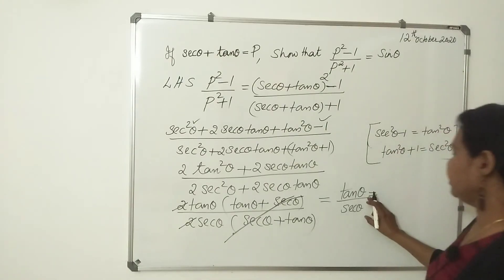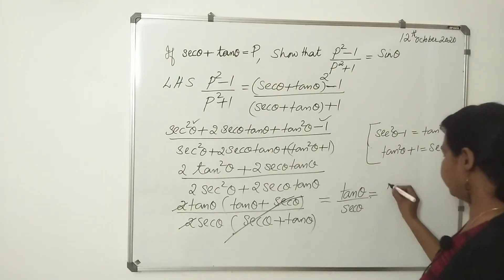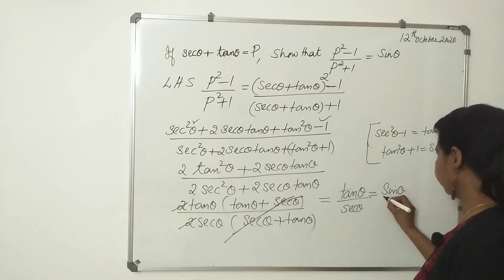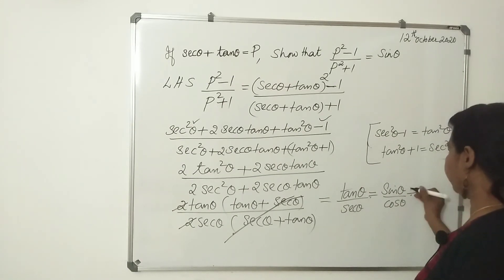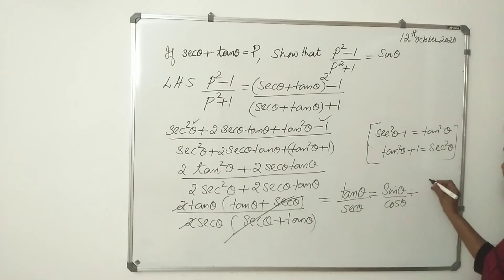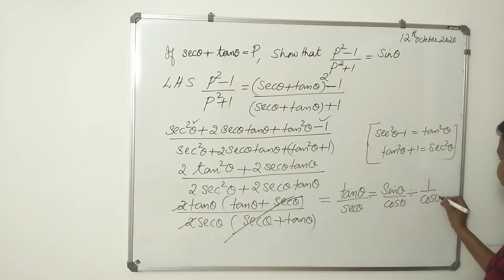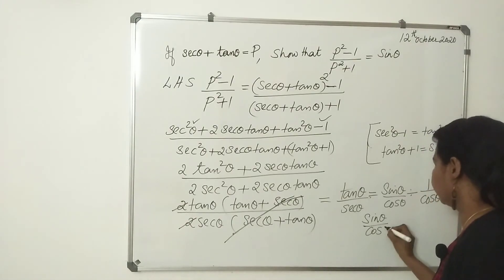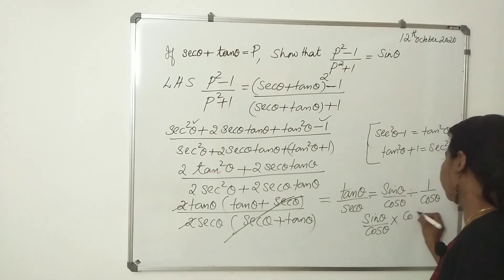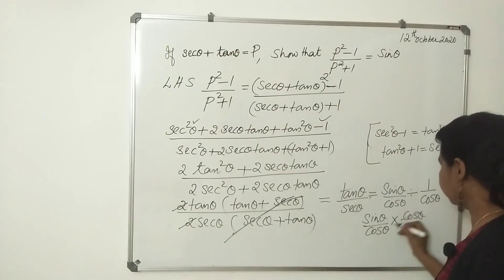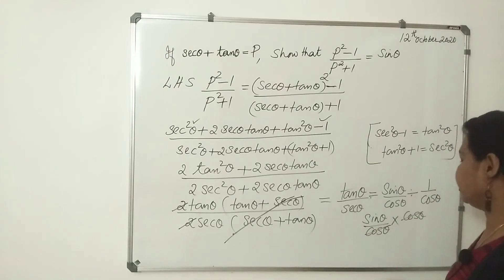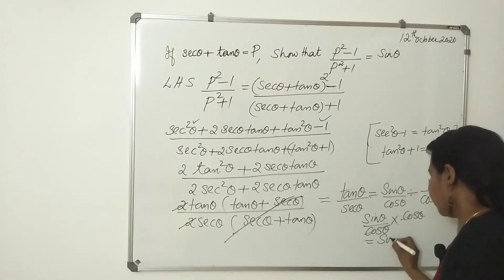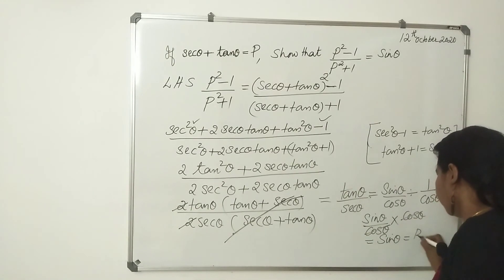We know tanθ = sinθ/cosθ, and secθ = 1/cosθ. So tanθ ÷ secθ = (sinθ/cosθ) × (cosθ/1). The cosθ terms cancel, and we get sinθ, which is the RHS. Hence proved.